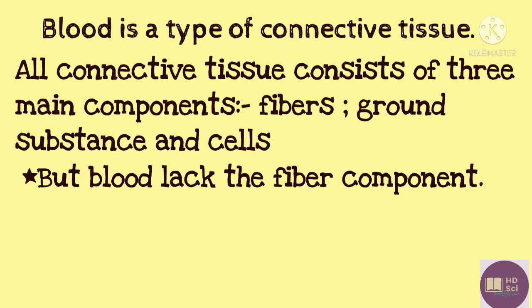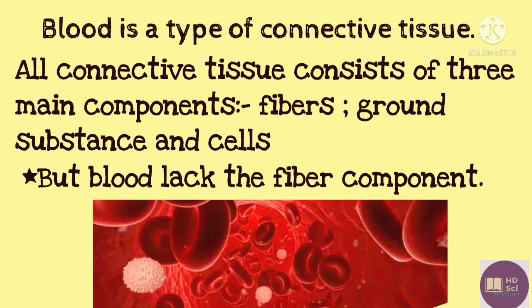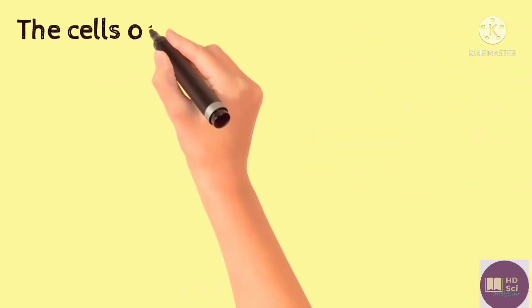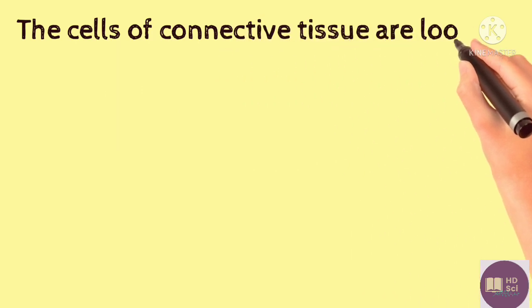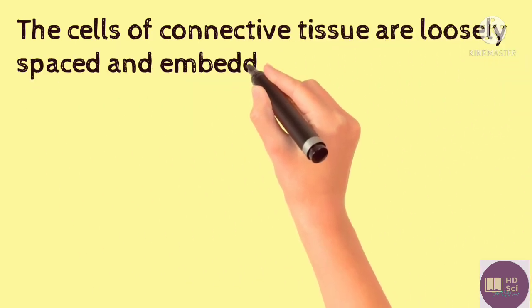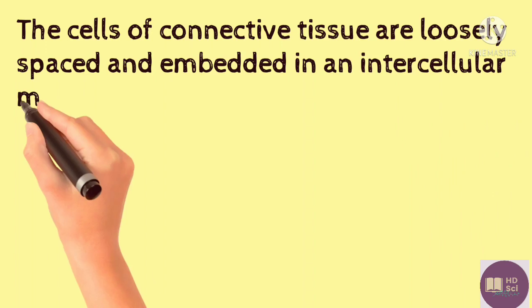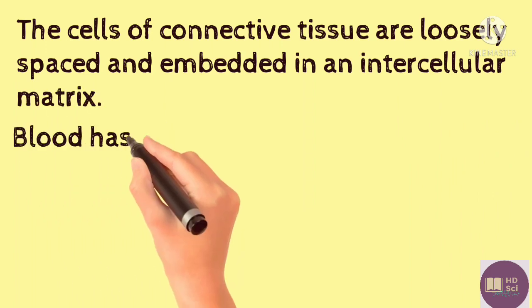But blood lacks the fiber component, so it is a special type of connective tissue. The cells of connective tissue are loosely spaced and embedded in an intercellular matrix.